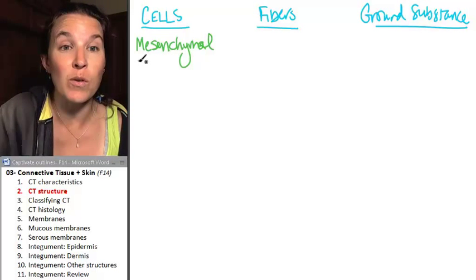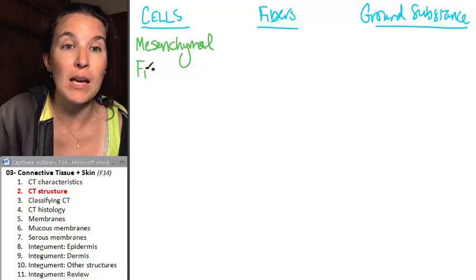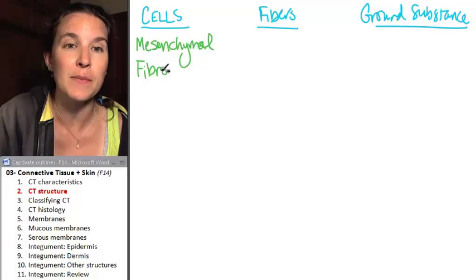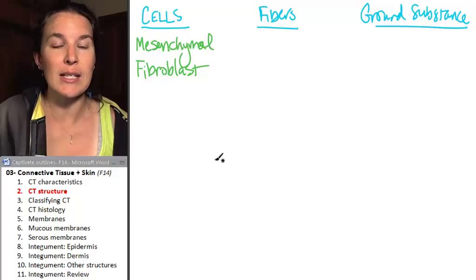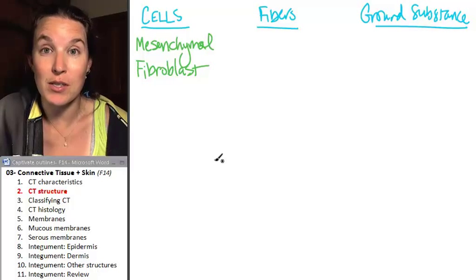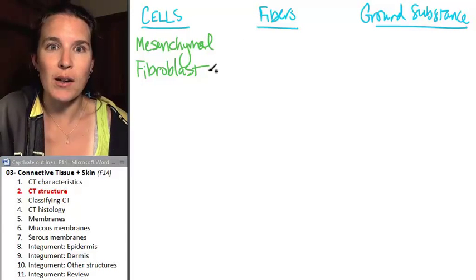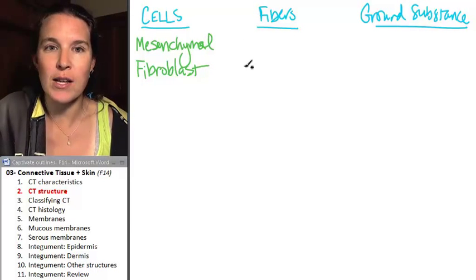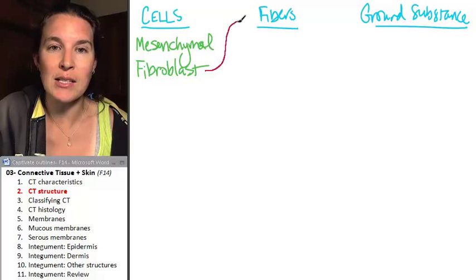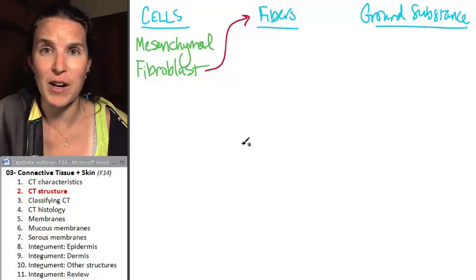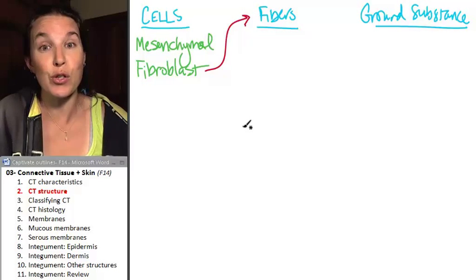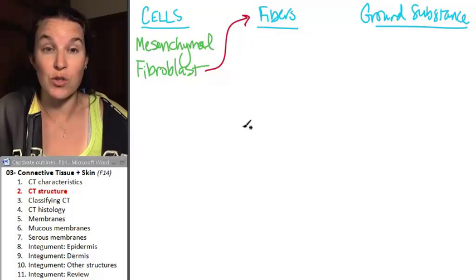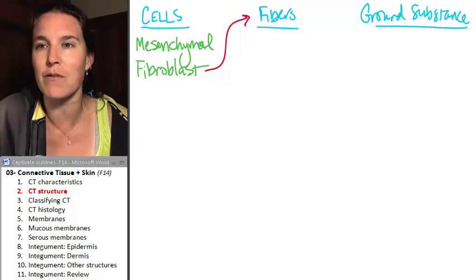Another type of cell that you will find quite commonly is called a fibroblast. Fibroblasts are specialized cells that actually build fibers. So guess what? Check it out. Our friend the fibroblast is basically going to barf out a bunch of fibers into the surrounding environment and produce the fibers of the connective tissue.